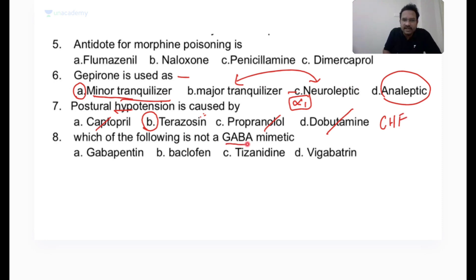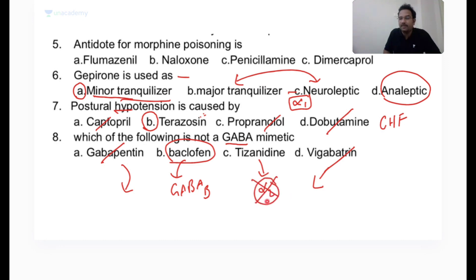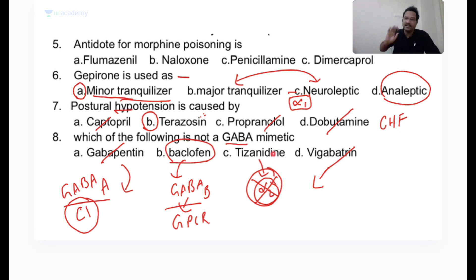Which of the following is NOT a GABA mimetic? Gabapentin is a GABA mimetic. Baclofen acts at GABA-B receptors. Vigabatrin is also a GABA mimetic. Tizanidine is an alpha-2 agonist and is NOT related to GABA mechanisms. GABA-A receptors are ion channel (chloride channel) receptors, while GABA-B receptors are metabotropic G-protein coupled receptors. Tizanidine is a central skeletal muscle relaxant, not a GABA mimetic.